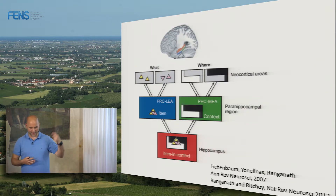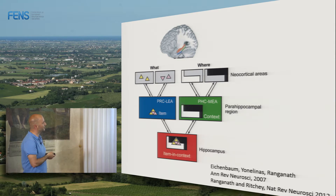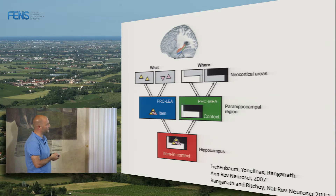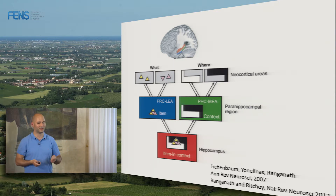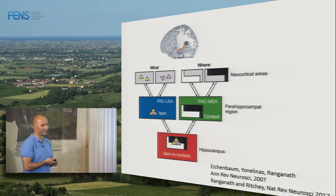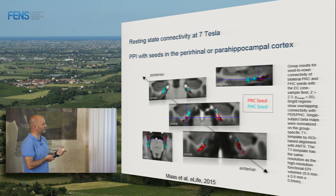Pattern separation is going to be important, but we also have to distinguish between the two pathways: the what and where pathway, going through the perirhinal and lateral entorhinal cortex as an object or item pathway, and the para-hippocampal and medial entorhinal cortex as a spatial context pathway. In humans we don't know what the connectivity is — we don't know how the perirhinal cortex is functionally connected to the entorhinal cortex and how that differs from the para-hippocampal cortex. So we used 7 Tesla to actually delineate this connectivity.